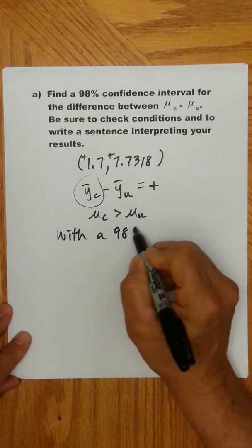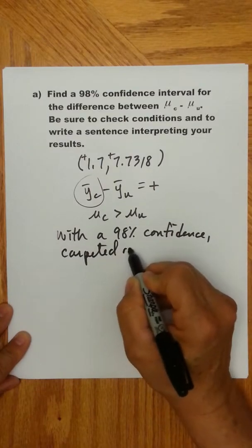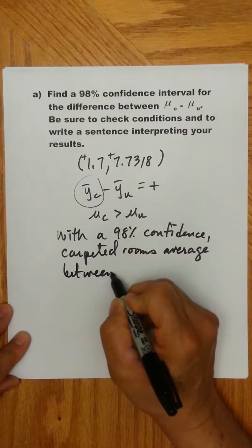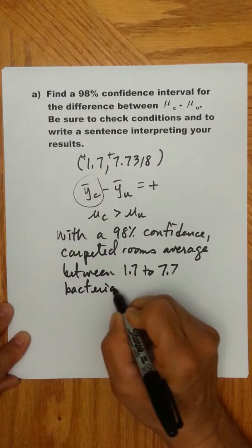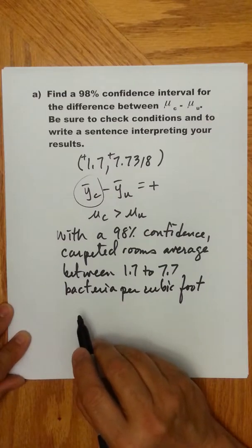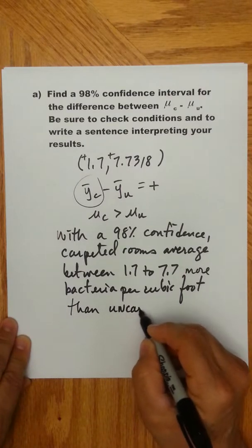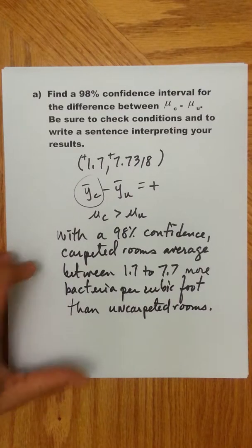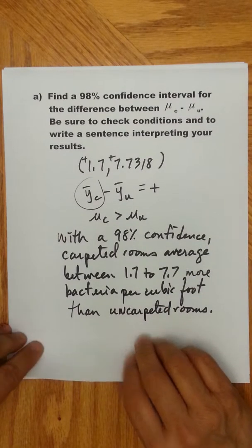With 98% confidence, carpeted rooms average between 1.7 and 7.7 bacteria per cubic foot more than uncarpeted rooms. So that's our confidence interval sentence.